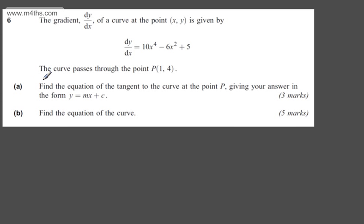In part A, for three marks, we're asked to find the equation of the tangent to the curve at point P, giving our answer in the form y = mx + c. A tangent is just a straight line. For the equation of a straight line, we need two things: a point that it passes through, which we've got, and also a gradient.